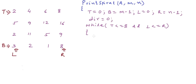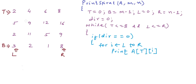When dir equals 0, we traverse the topmost row from left to right: for i from L to R, print A[T][i]. Once done, we discard that row by incrementing T (T++). In the example, T starts at 0, we print the top row, then T becomes 1. We then change direction — dir becomes 1.